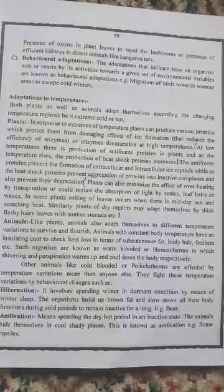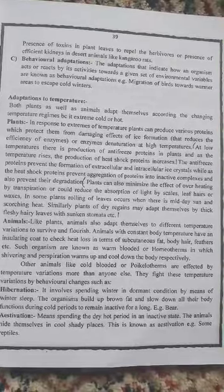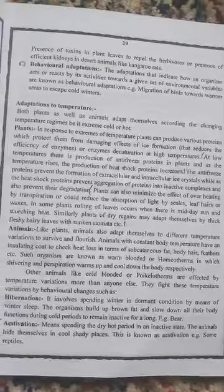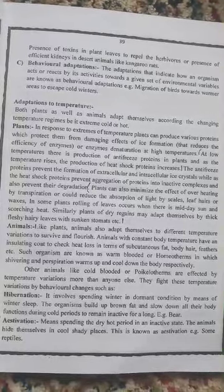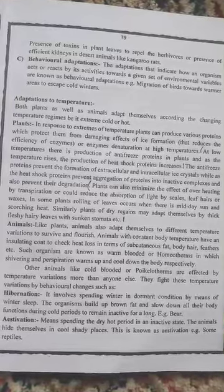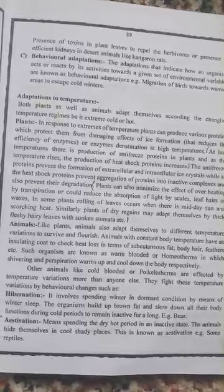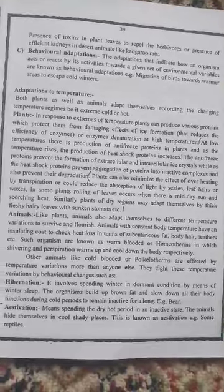In warm-blooded animals, they keep their body temperature constant through their natural features. They may have insulating coats to check heat loss, and they have subcutaneous fat, body hair, feathers, and other structural features that prevent the loss of heat from their body.